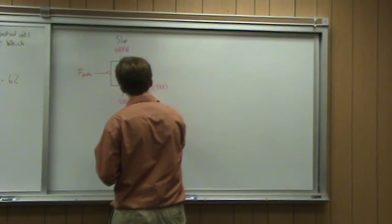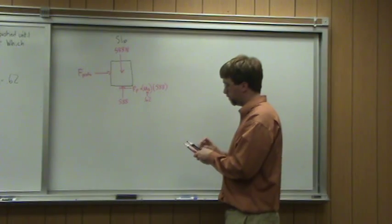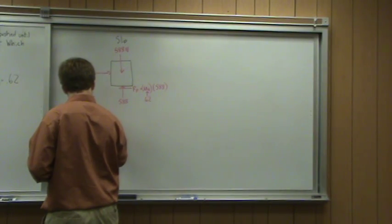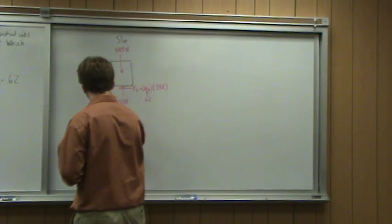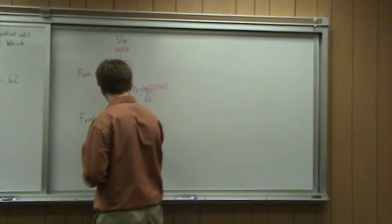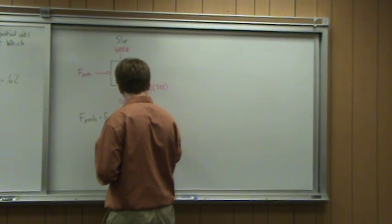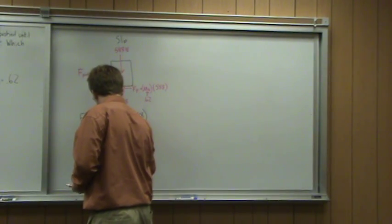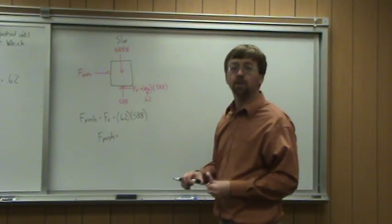Mu static is 0.62 — that was given in the problem. So the pushing force, right before it starts to move, is equal and opposite to the friction force, which equals mu static times the normal force: 0.62 times 588 newtons. That gives a pushing force of 364.6 newtons.